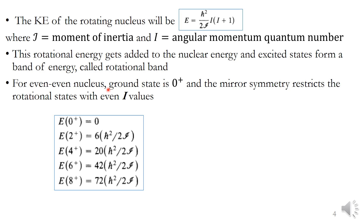For even-even nuclei, the ground state is 0+. Mirror symmetry restricts the rotational states to even I values only. So for a ground state of even-even nuclei with 0+, if the nuclei have rotational effects, they have additional energy from the rotational energy. By mirror symmetry, all rotational energies are not possible — only even values of I are allowed.